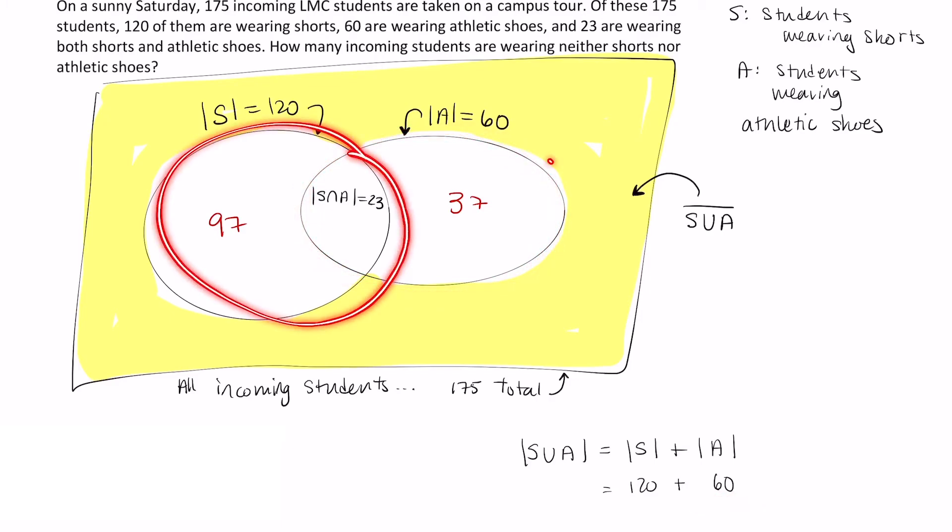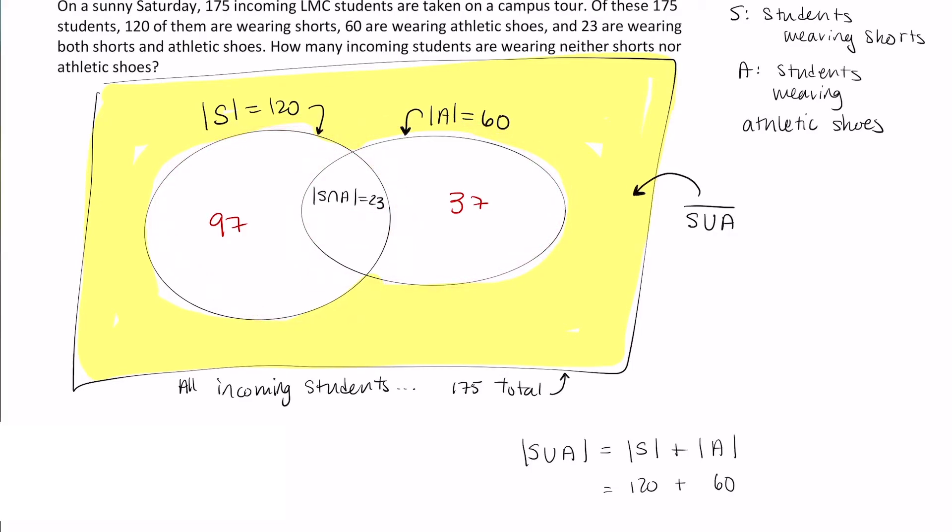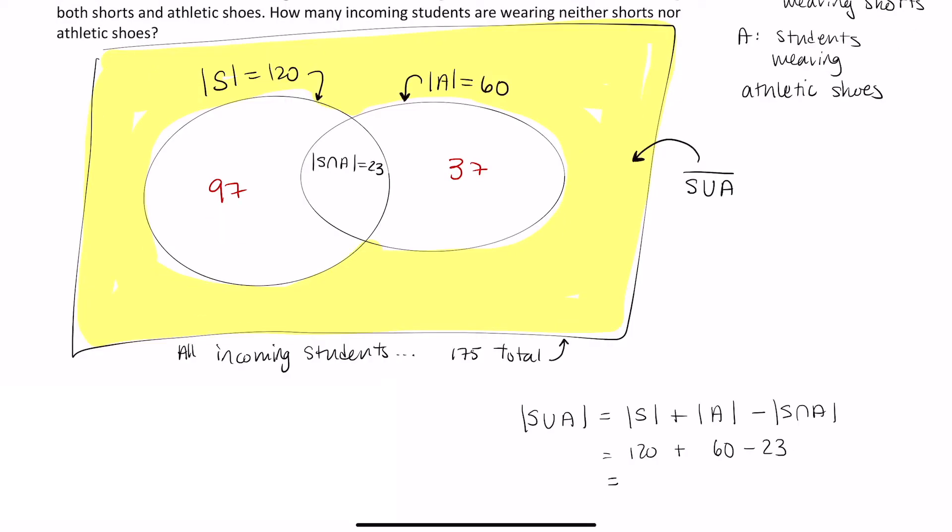As you can see, we double counted. We double counted 23. So we have to subtract off a single 23, and finally this will get us to 157.